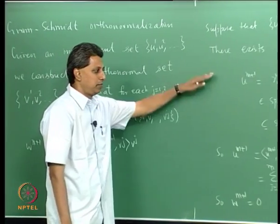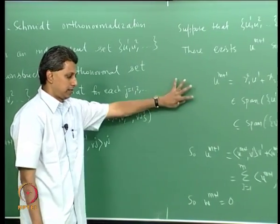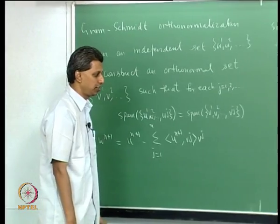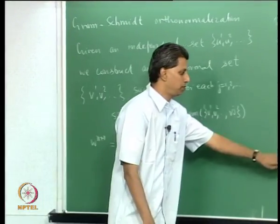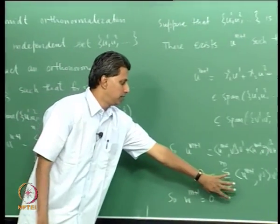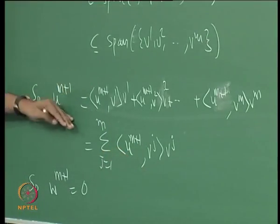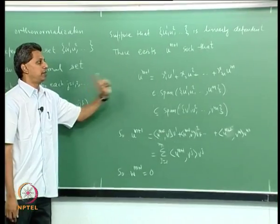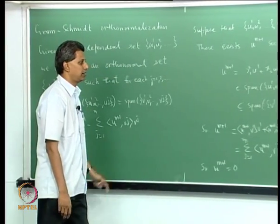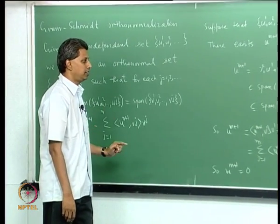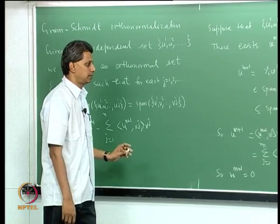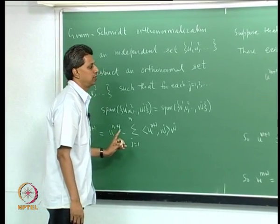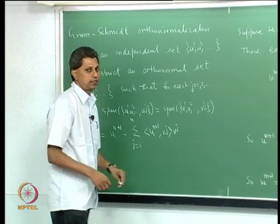This whole thing can be traced back: w_{m+1} is zero if and only if u_{m+1} equals this expression, which tells you that u_{m+1} is a linear combination of the preceding m vectors. So one can check linear dependence also by using the Gram-Schmidt procedure.